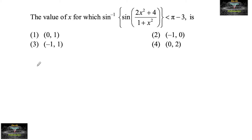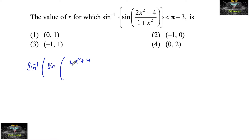Find the value of x for which sin⁻¹(sin((2x²+4)/(1+x²))) is less than π minus 3.